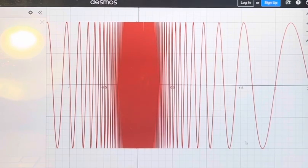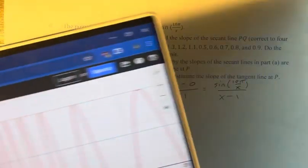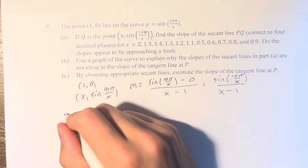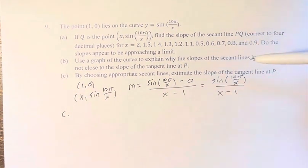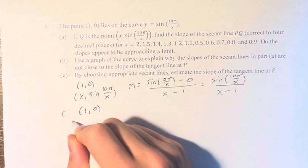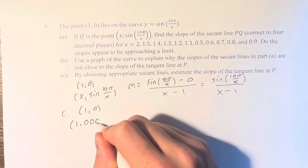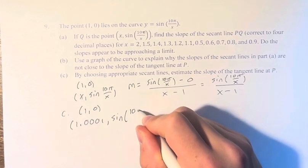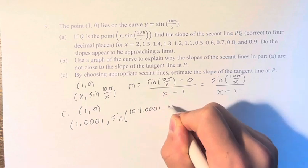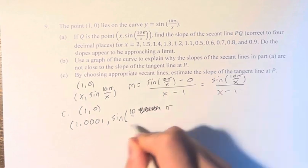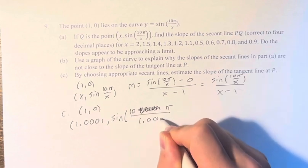So in order to do this, we are going to do the calculation, which is actually that screen that you just saw right before when I flashed on the computer, which is to do the calculation for (1,0) and (1.0001, sin(10π/1.0001)).